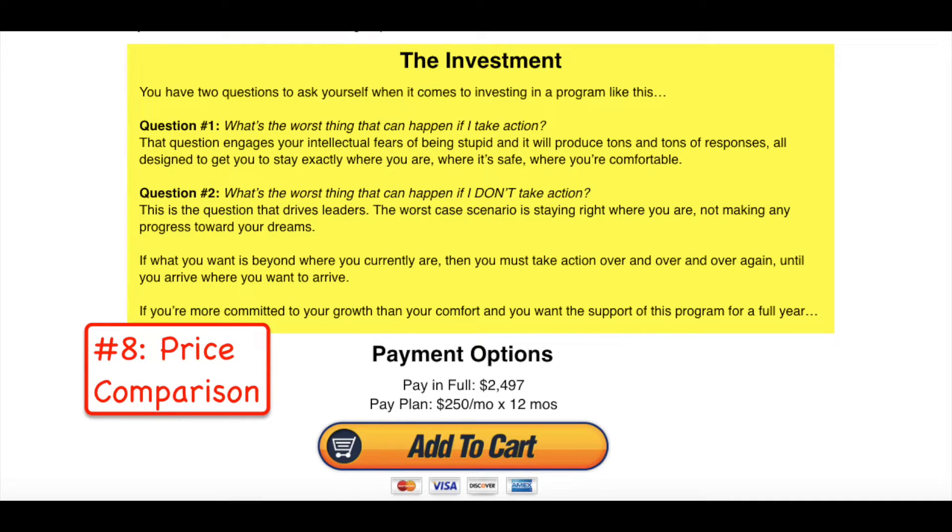Element number eight is a price comparison. Now there are many different ways you can do a price comparison. You can say it cost me all of this money to assemble all of this information, but I'm going to condense it and consolidate it for you at a much lower price. You can say if you buy all of these things separately on our website, it would cost this, but we've got a package price to get them all at the same time and this is your lower cost.